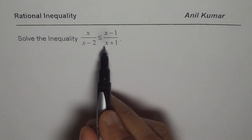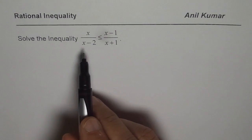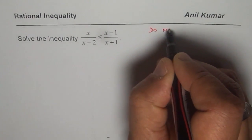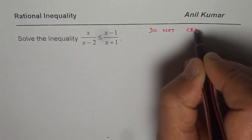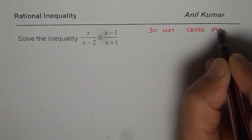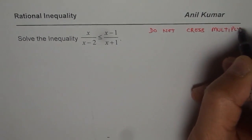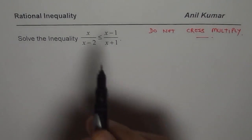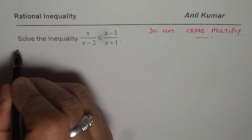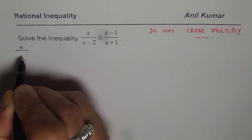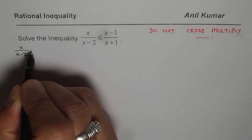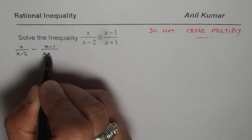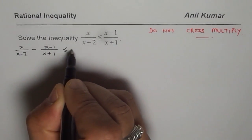To solve the inequality, we should bring all the terms to one side and caution here is do not cross multiply. Do not cross multiply. Now think about the reason why. We will get back to this. So do not cross multiply, bring them to one side. So when you bring them to one side, we get x over x minus 2 minus x minus 1 over x plus 1 is less than or equal to 0.